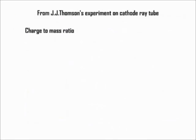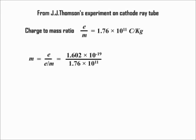We already know the charge to mass ratio of an electron in the experiment of J.J. Thomson with cathode ray tube. The ratio was 1.76 × 10¹¹ Coulomb per kg. From this, m = e/(e/m) = 1.602 × 10⁻¹⁹ / 1.76 × 10¹¹ = 9.1 × 10⁻³¹ kg which is the mass of an electron.